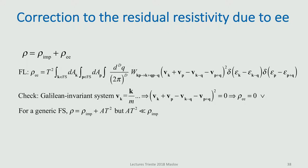We can check immediately for a Galilean invariant system. If we go back to the case when velocity is k over m, you replace each of these velocities by k over m or p over m, and then because we have momentum conservation, the entire term vanishes. So in the Galilean invariant system, you do have T squared, but it's multiplied by zero. This is still the limit when we did perturbation theory, which means the T squared term in resistivity is small.